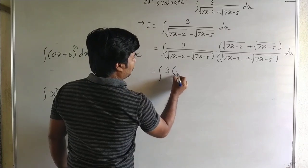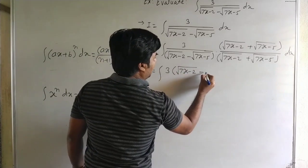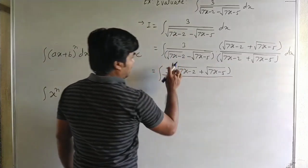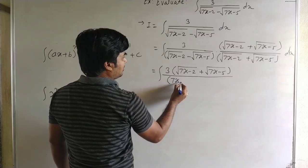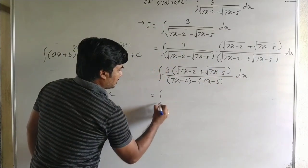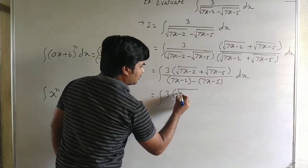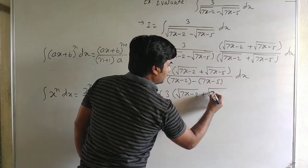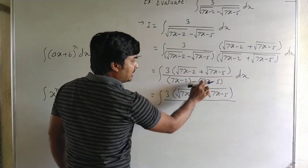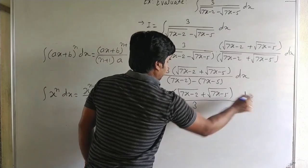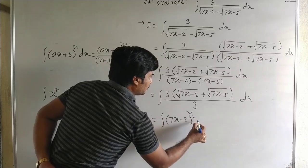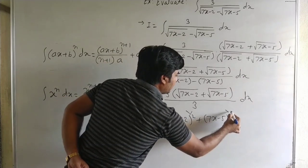The numerator becomes 3 into under root 7x minus 2 plus under root 7x minus 5. The denominator using a minus b times a plus b equals a squared minus b squared gives 7x minus 2 minus 7x minus 5. The 7x terms cancel, giving minus 2 minus minus 5 equals 3, so 3 and 3 cancel.